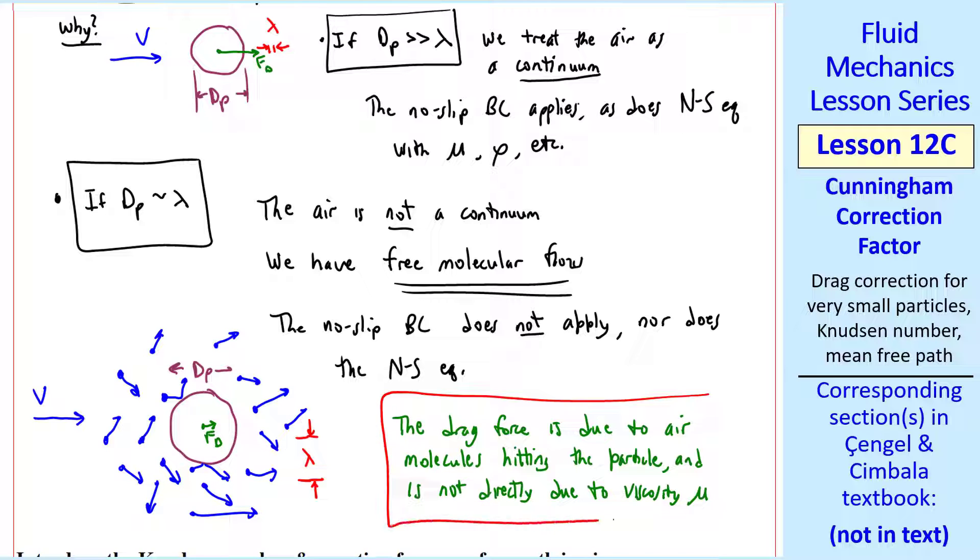For this free molecular flow condition, the drag force is due to air molecules hitting the particle and is not directly due to viscosity mu. And we expect fd to be smaller for the same particle size and same average speed. For free molecular flow, we need to correct for these free molecular effects.